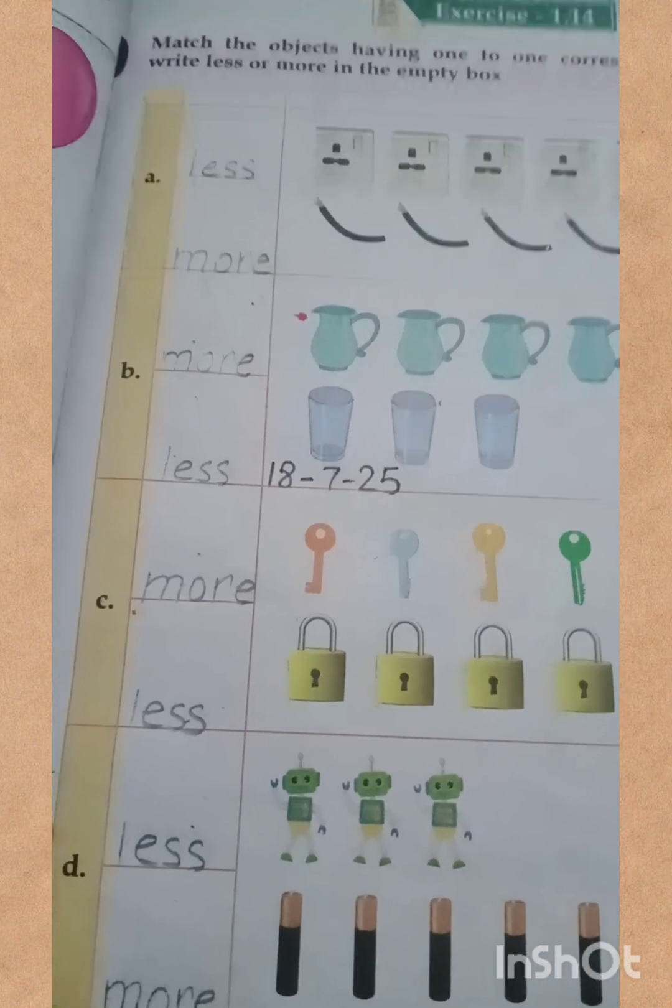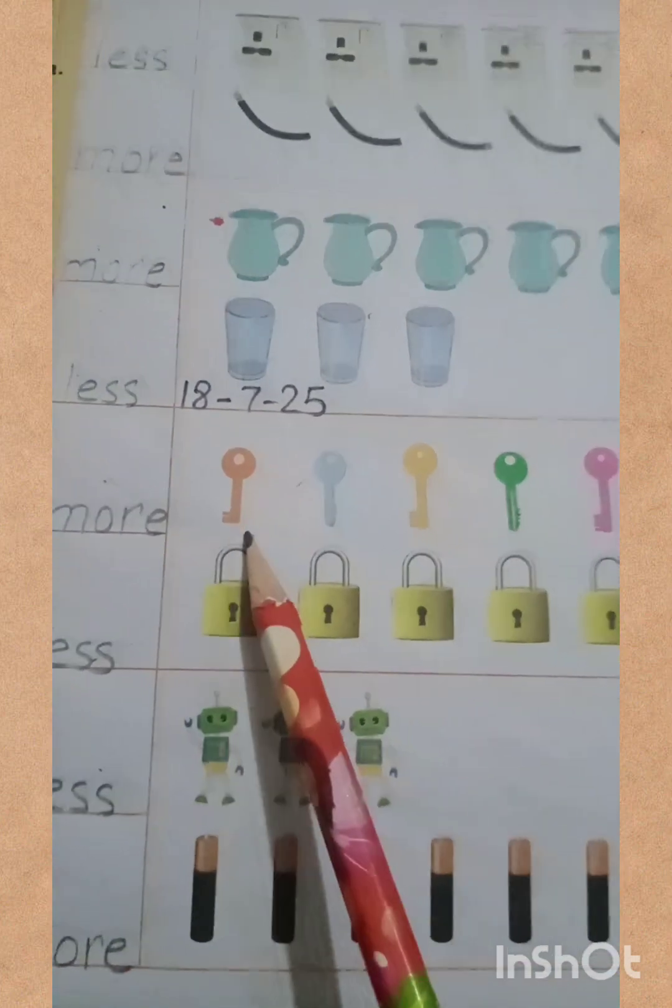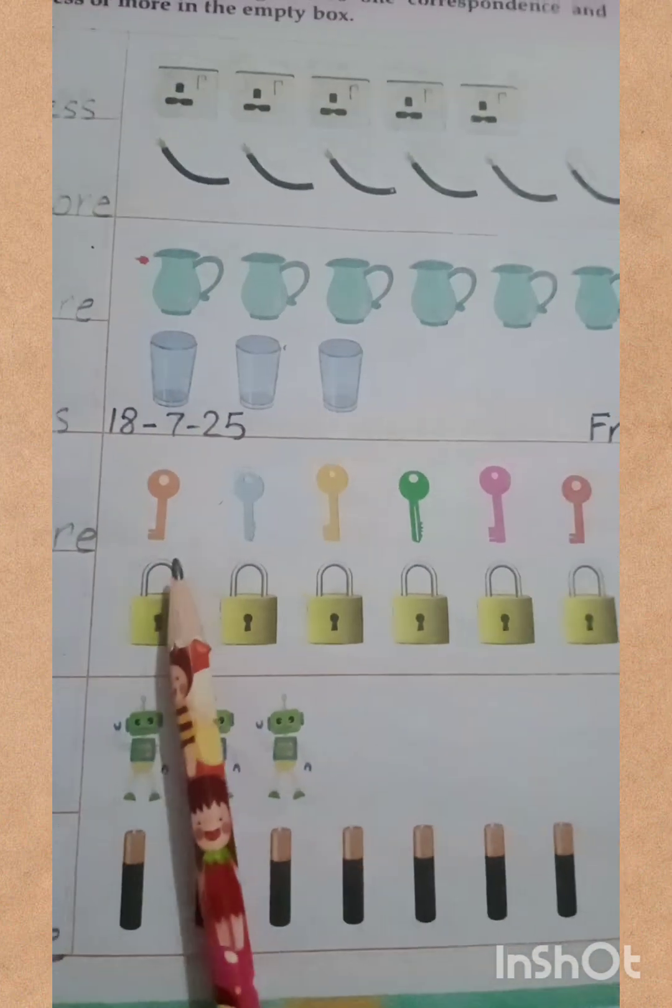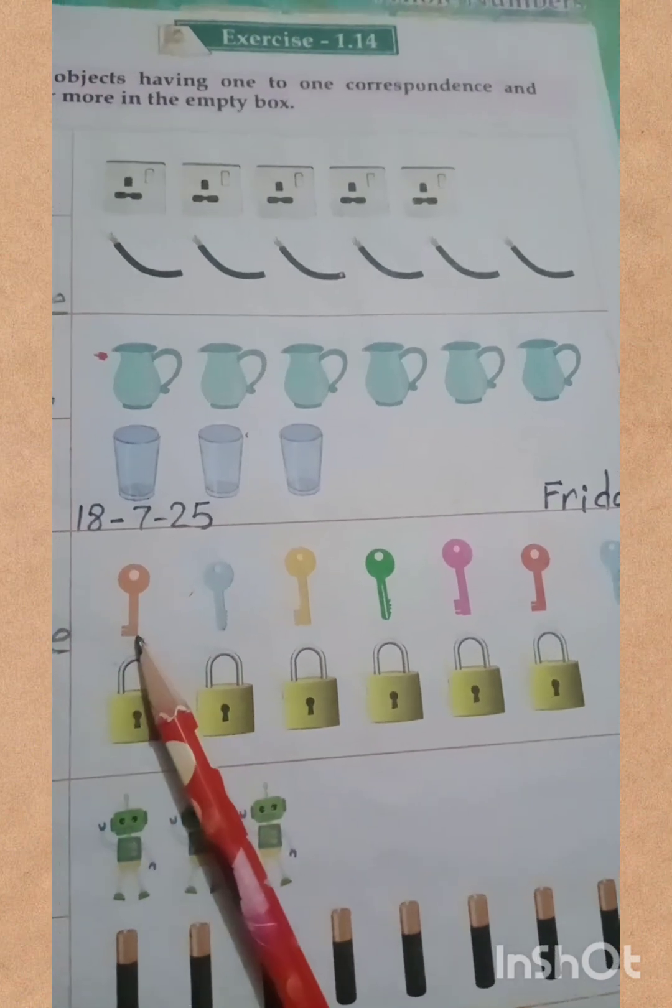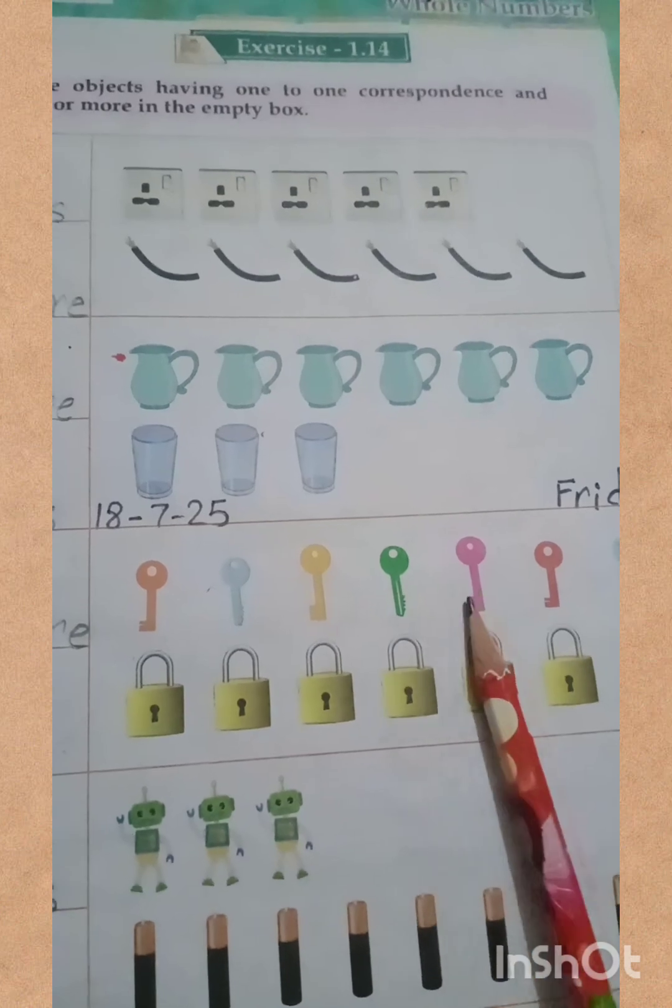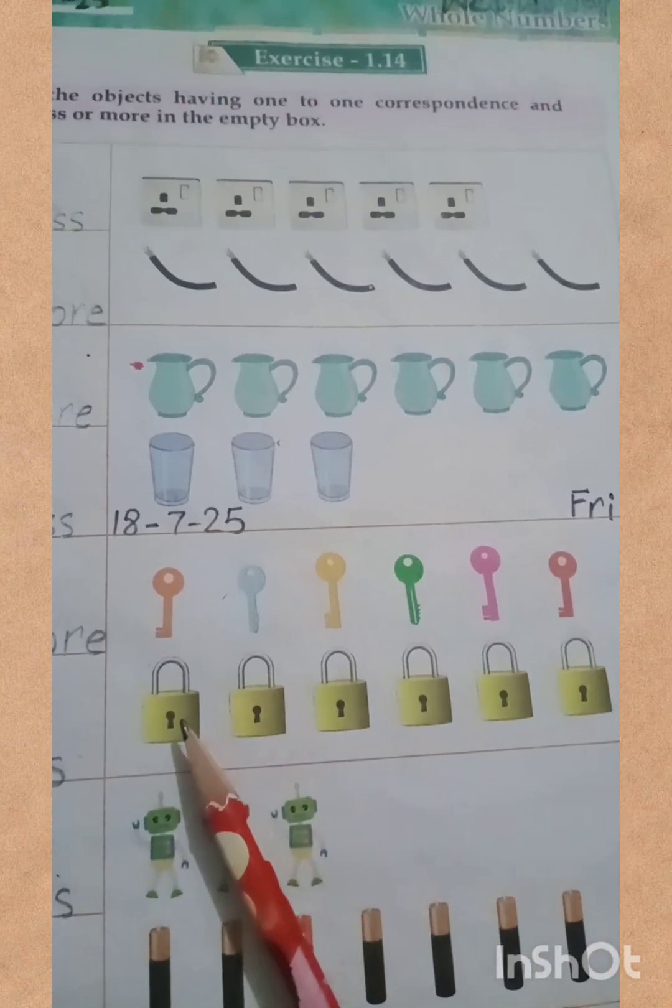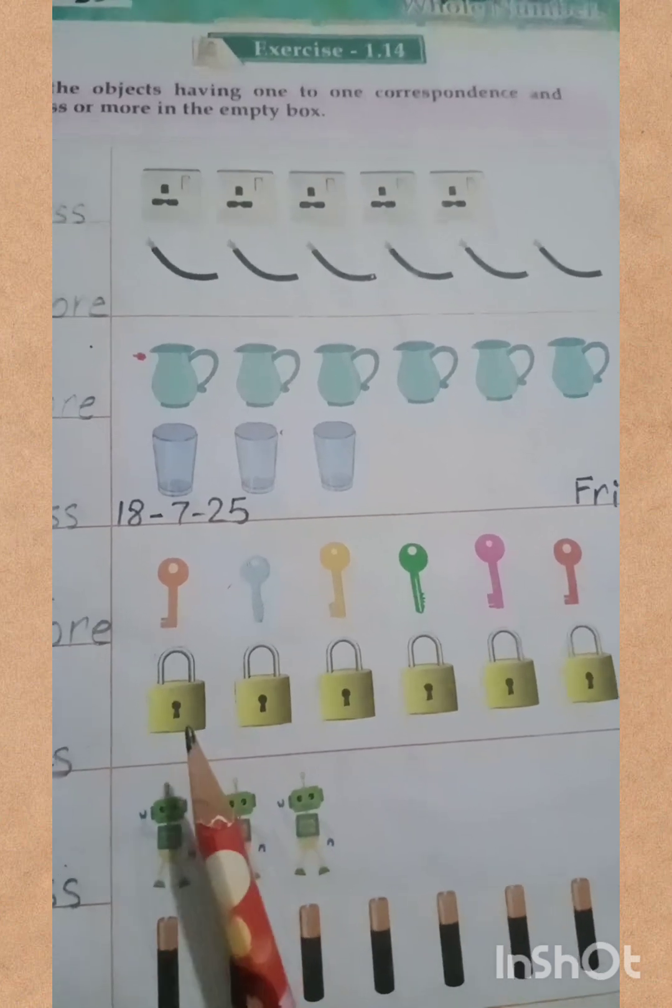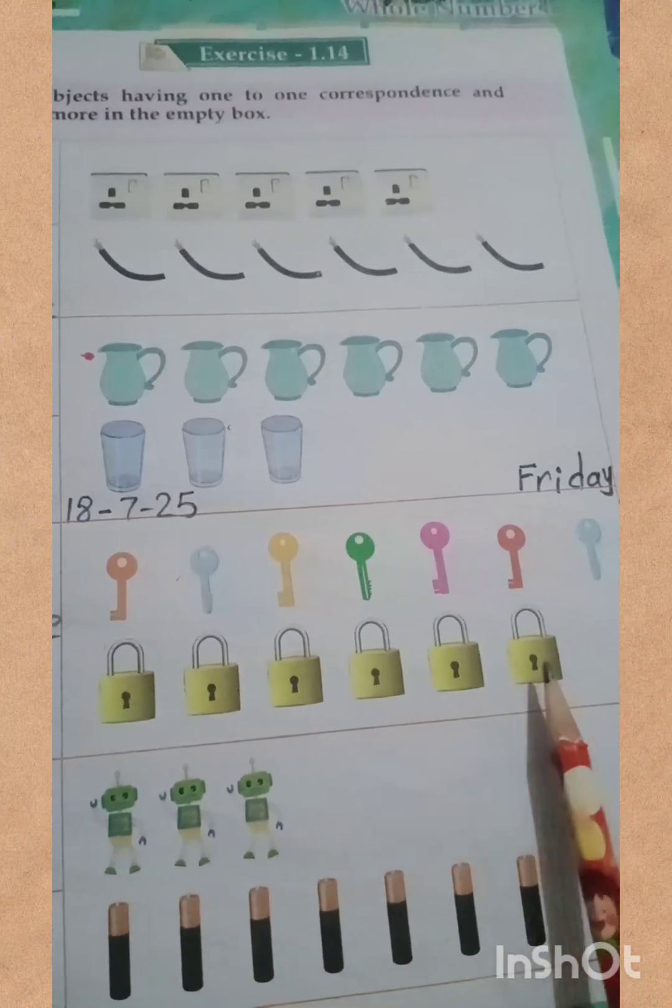My dear students, you can see the picture of keys and locks. We count the keys: one, two, three, four, five, and six. We will compare it with the locks. So count the locks: one, two, three, four, five, six.